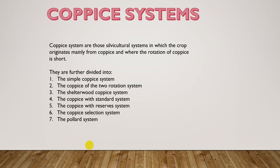The coppice system is a low forest system. Coppice systems are silvicultural systems in which the crop originates mainly from coppice shoots, and where the rotation is short.